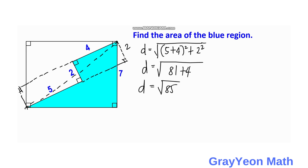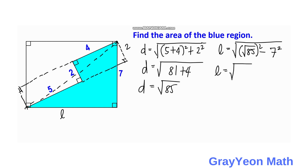Next, we find the length of this rectangle. The length l equals the square root of the diagonal squared minus 7 squared — so √(85 − 49) = √36 = 6.